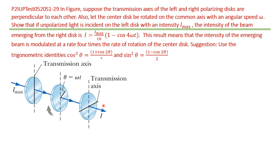This result means that the intensity of the emerging beam is modulated at a rate of 4 times the rate of rotation of the center disk. We will use the trigonometric identities: cosine squared zeta equals one plus cosine 2-zeta over 2, and sine squared zeta equals one minus cosine 2-zeta over 2.